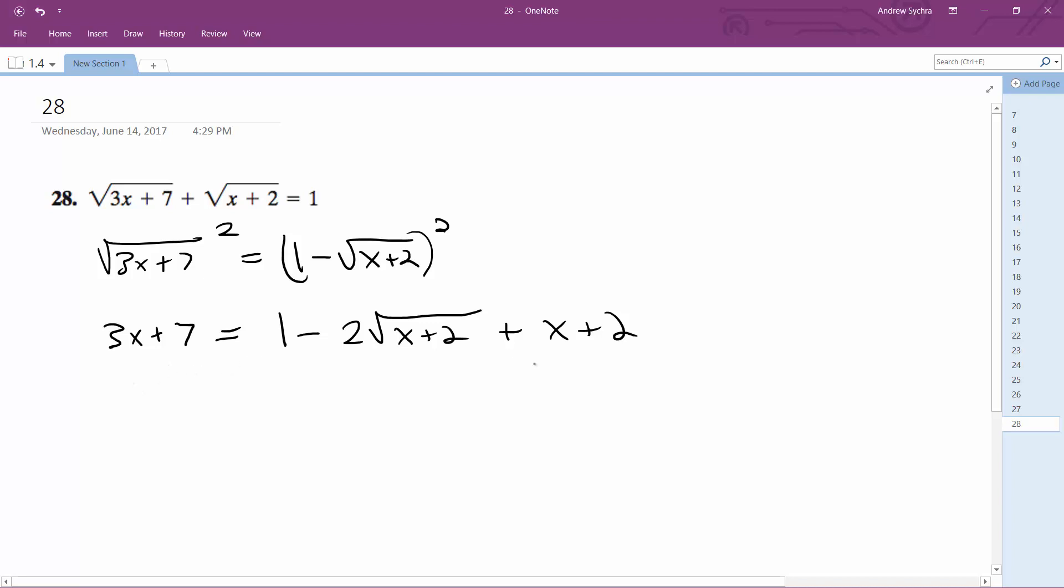All right, so move the x terms over. X and then the constant, so minus x, and then this is minus 3, so I get 2x plus 4 is equal to negative 2 square root of x plus 2.